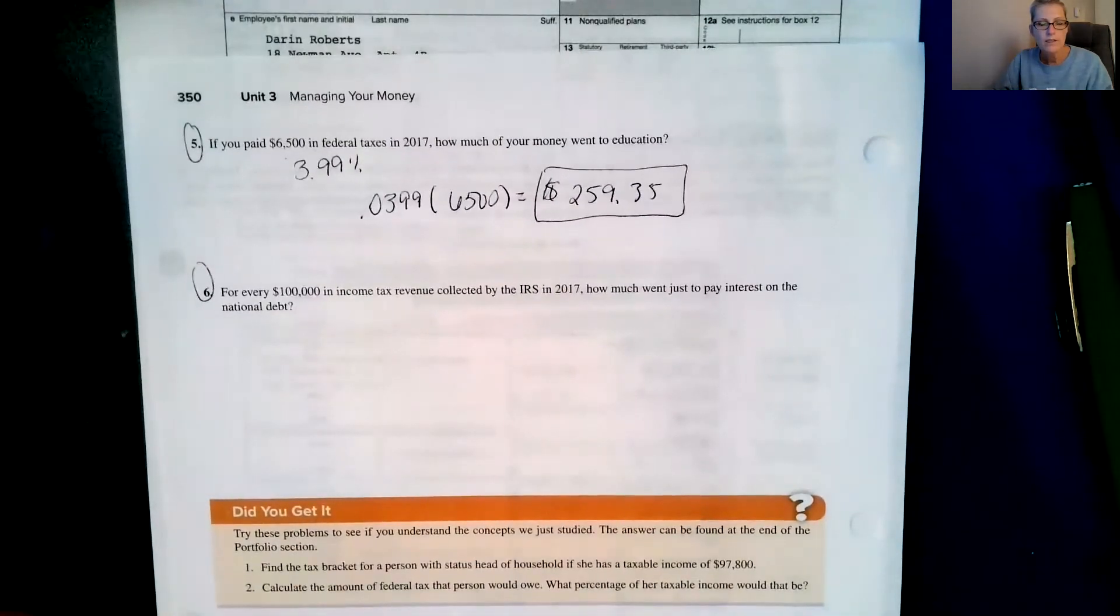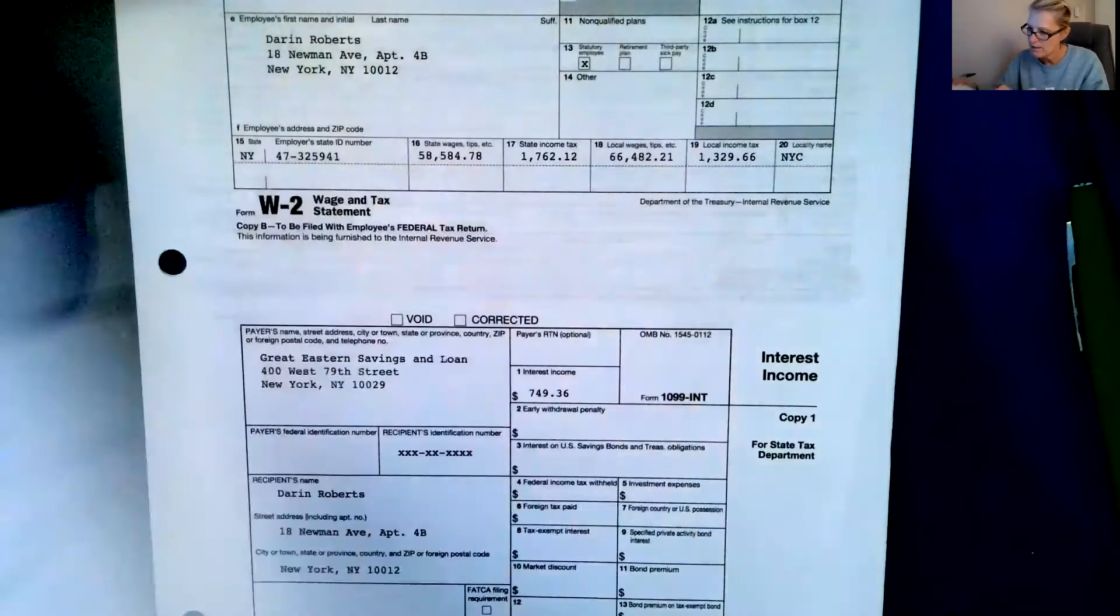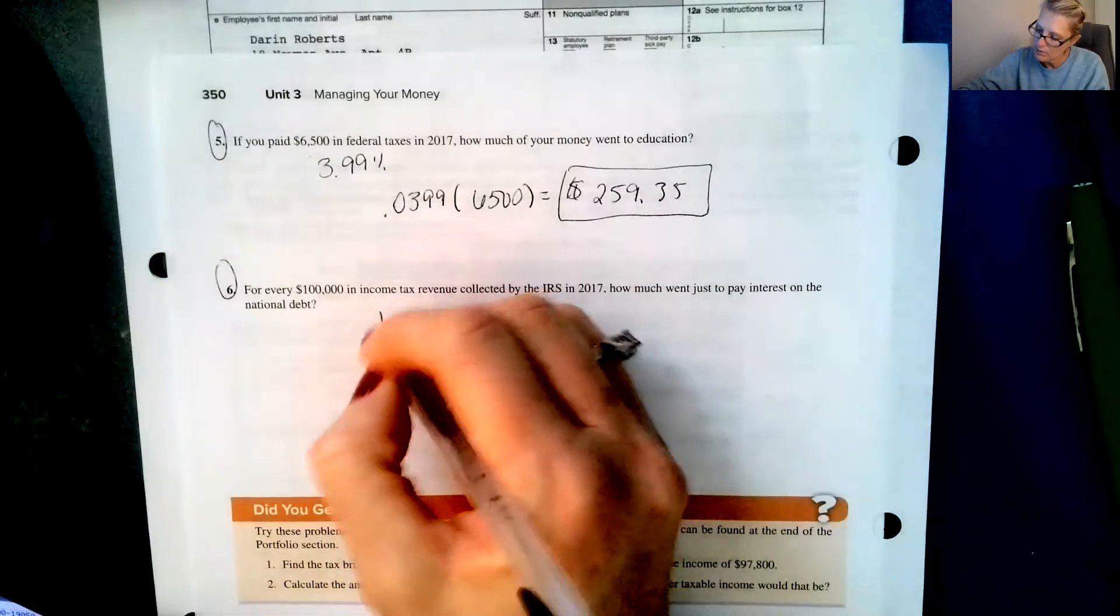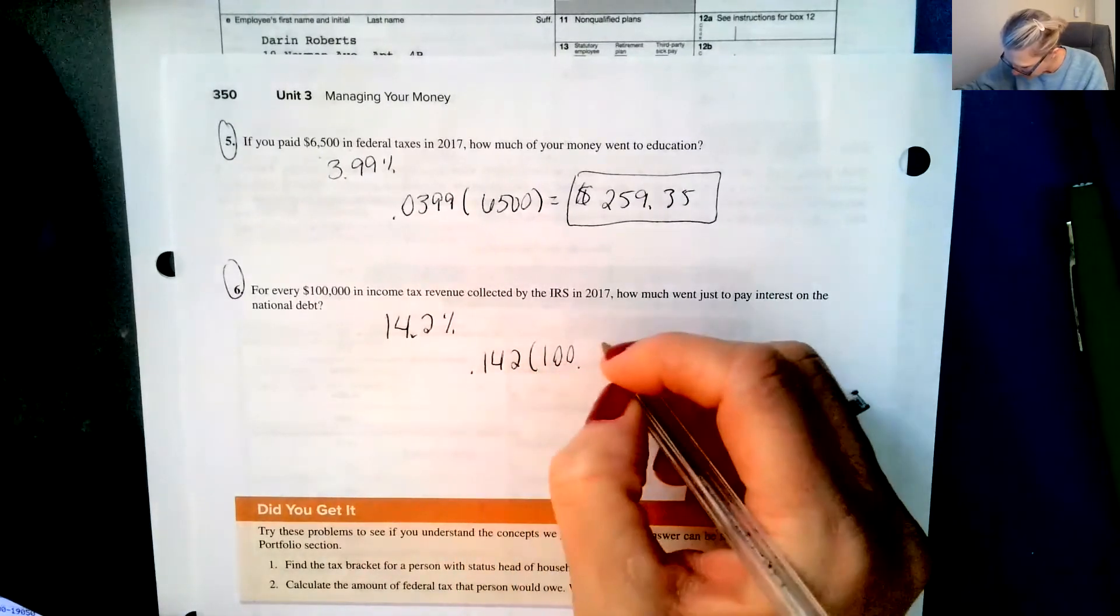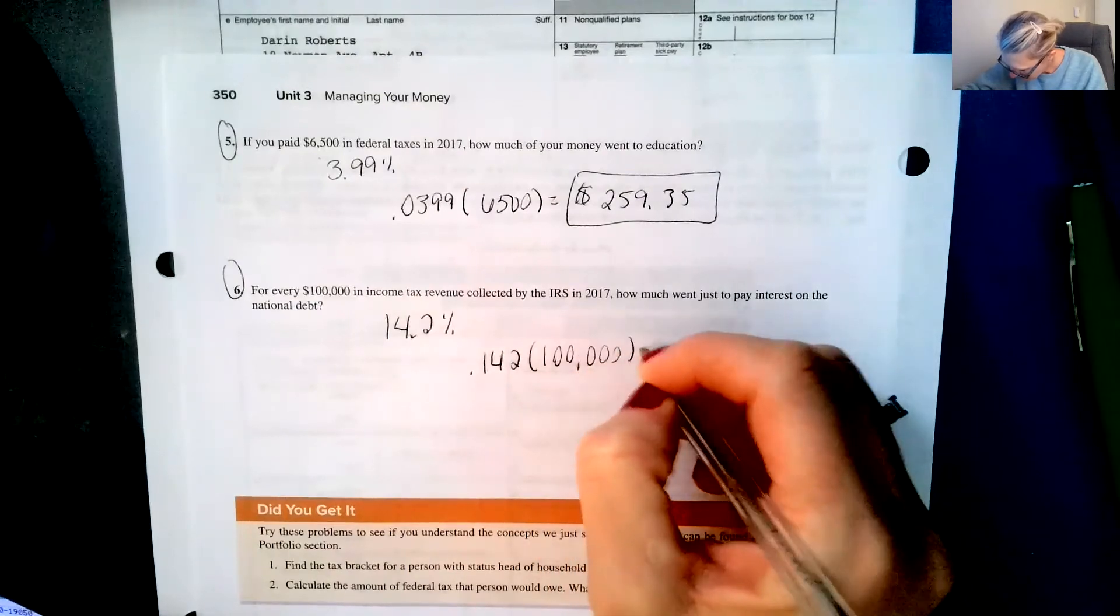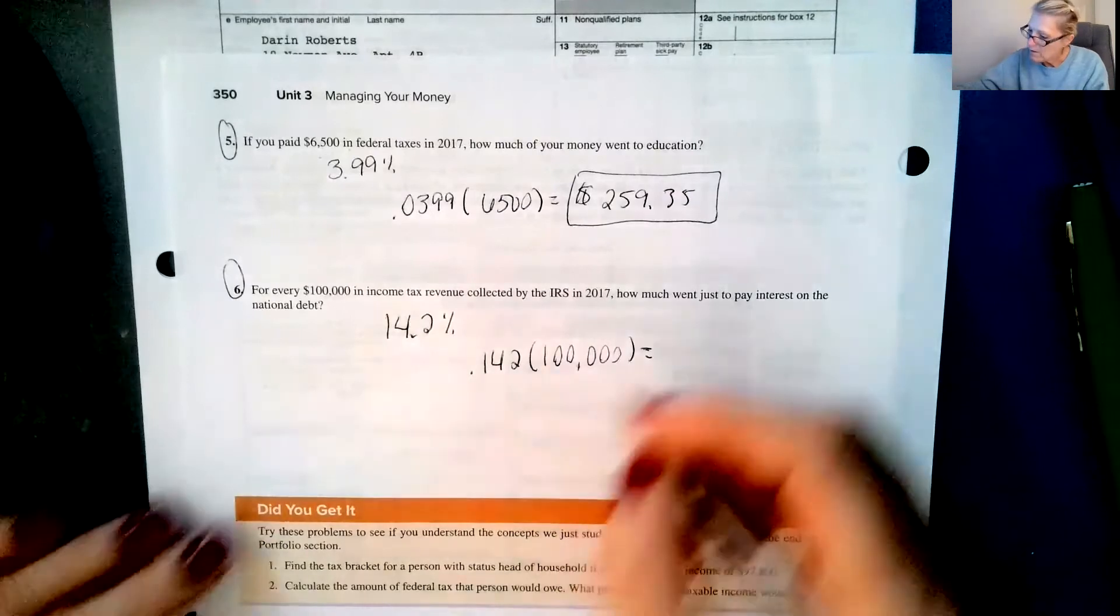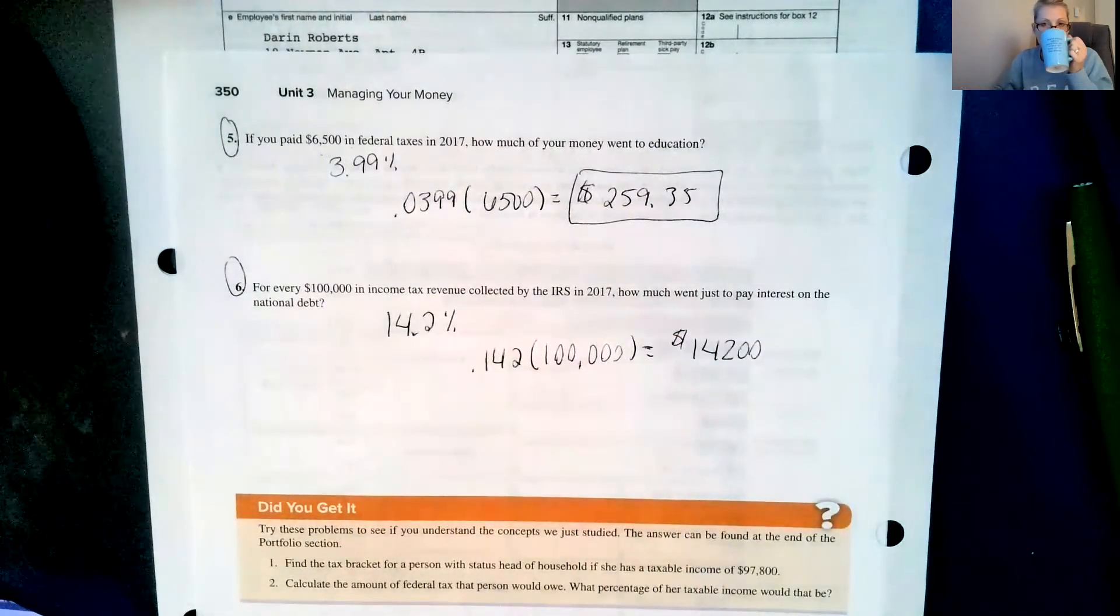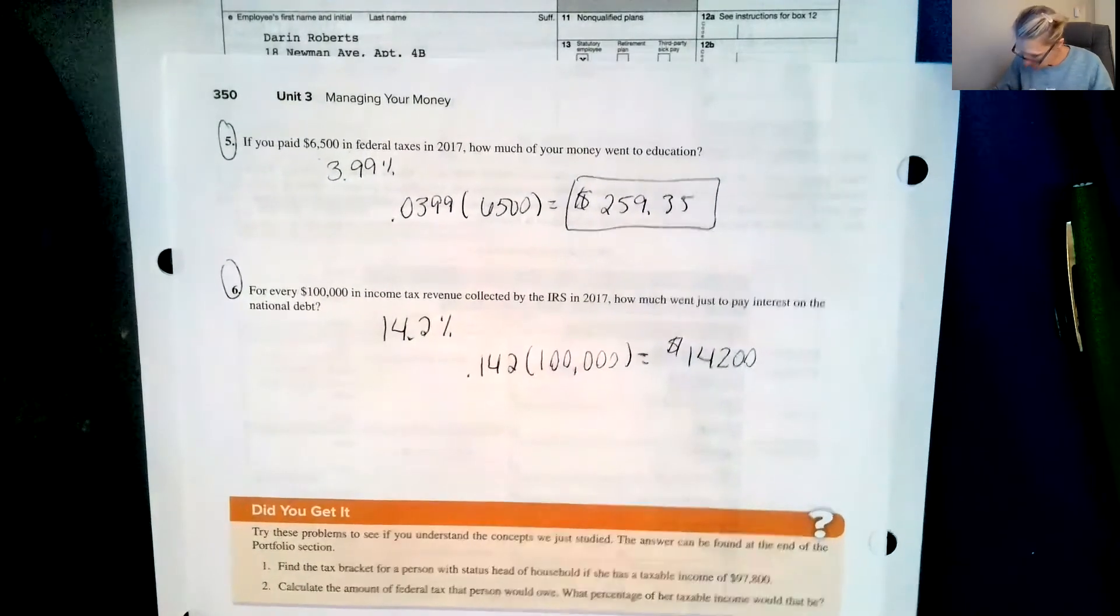Number six says for every $100,000 in income tax revenue collected by the IRS in 2017, how much went just to pay interest on the national debt? And we brought that up. Interest on the national debt was 14.2%. So 0.142 times that $100,000, which is $14,200. A lot of money.